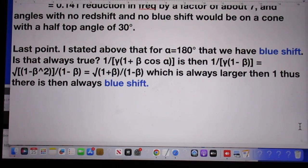And that's always larger than 1 because beta is always larger than 0. So it is the square root of a number which is larger than 1 divided by a number which is smaller than 1. So that is always larger than 1. And indeed it is therefore correct that if the galaxy is moving directly in the direction of the earth, there is indeed always blueshift.